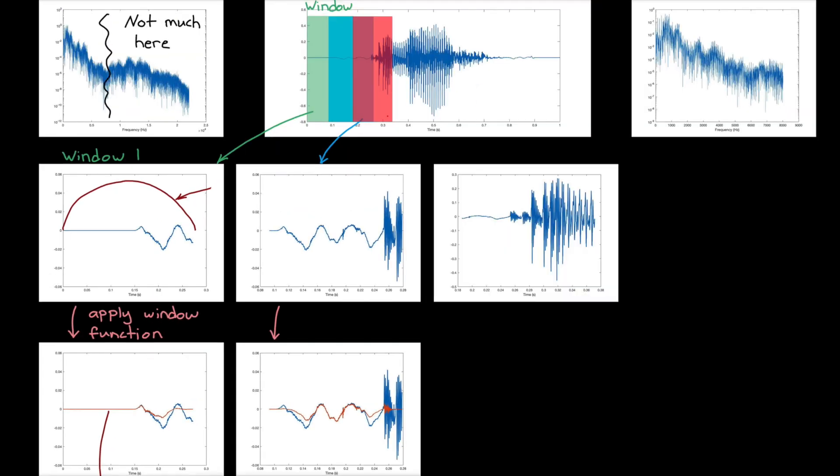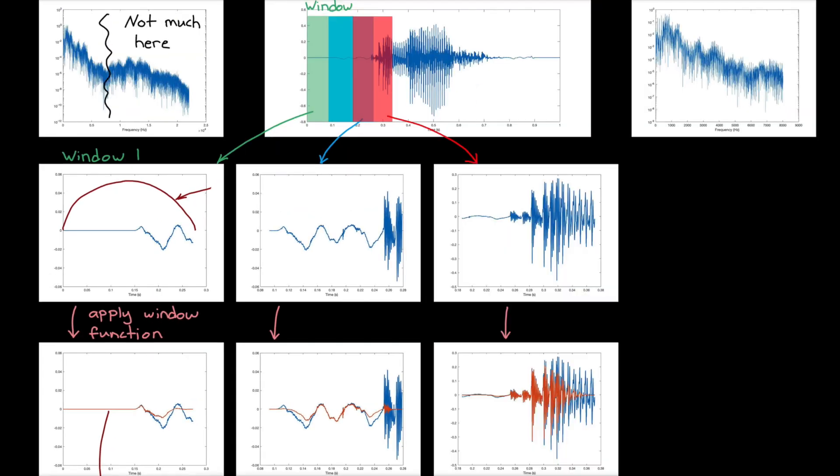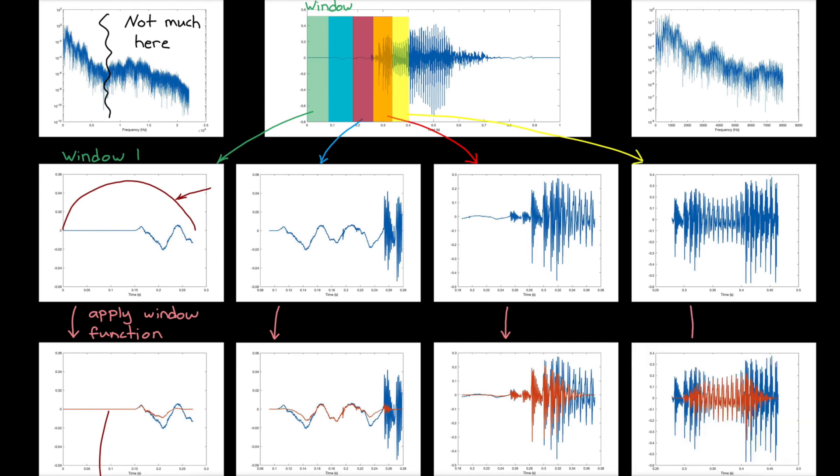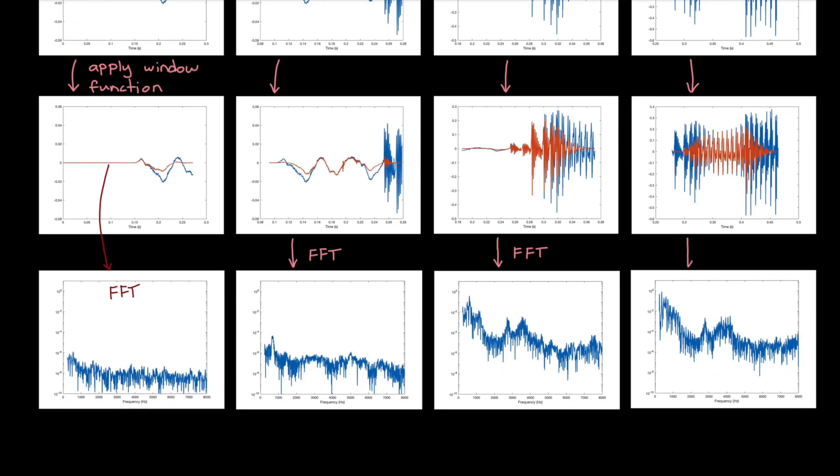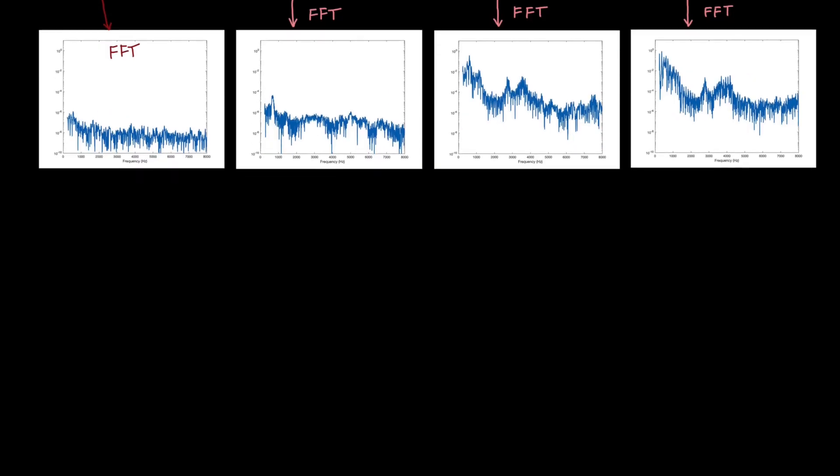Alright, we keep this up by hopping the window across the entire signal, and then applying the window function, and then taking the FFT. Here I'm just showing the first four windows so you get the idea. But if we go all the way across the whole signal, what we're left with is the frequency content by window. But here, once again, we have more information than we actually need. Each FFT produces a spectrum with thousands of values, and we don't need that level of granularity.